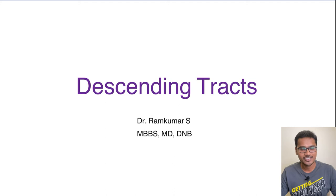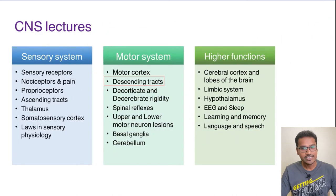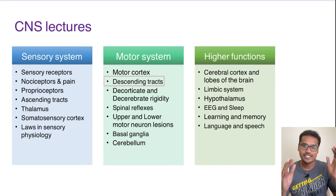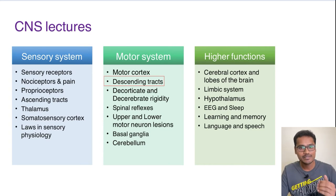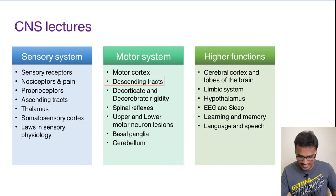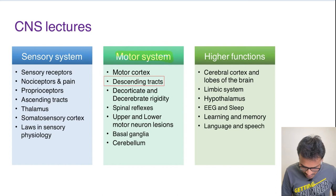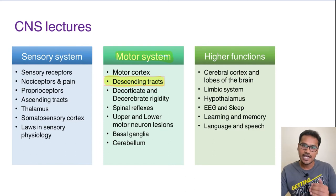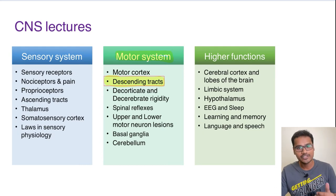Hello everyone, welcome to my YouTube channel Physiology Learning. In today's discussion we are going to study about the descending tracts. In our previous discussion on the motor system, we saw that the motor cortex prepares the action. Once the action is prepared, fibers are sent down to the muscles and the final action is carried out. These tracts, which carry impulses from the motor cortex to the periphery, are called descending tracts. This is one of the most important topics for MCQs as well as theoretical papers for MBBS examinations.